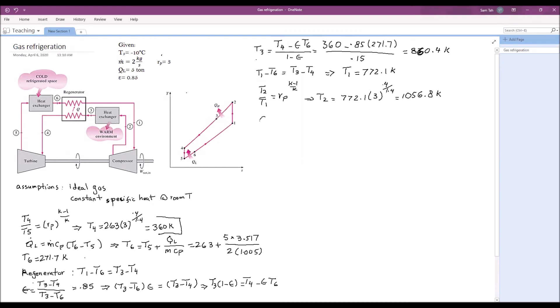Then we can find Q dot H, the heat rejected in the warm heat exchanger, as m dot times Cp times T2 minus T3, which is equal to 2 times 1.005 times 1056.8 minus 860.4. And the answer is 394.8 kilowatts.